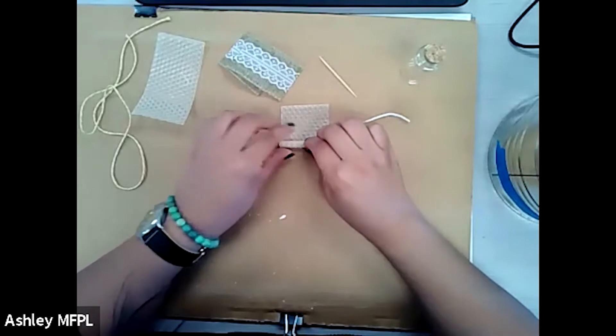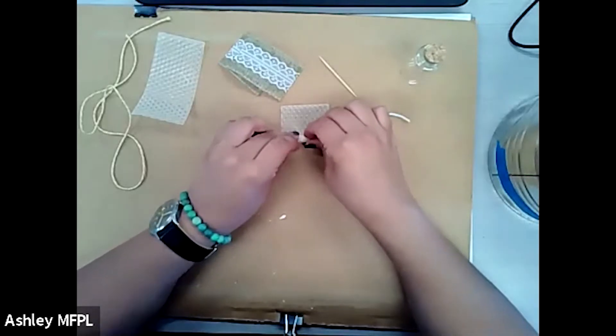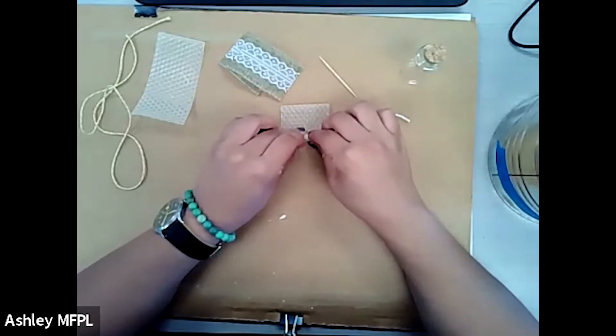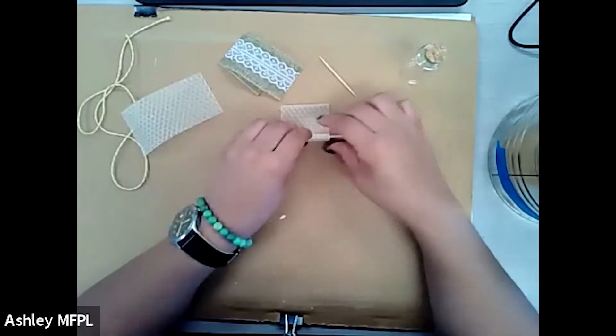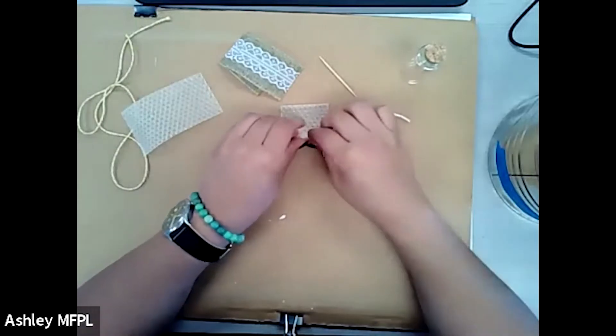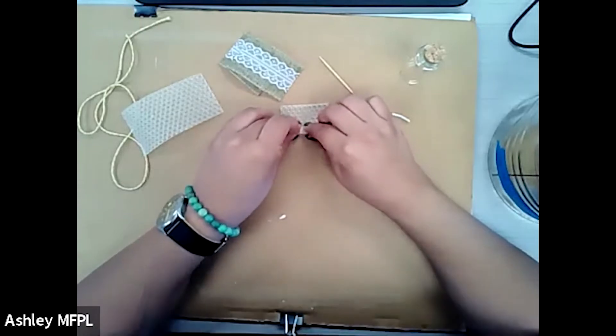And the wick we're using, we're just using a plain wick. But what some people like to do, they like to dip it in leftover, like they'll melt pieces of the honeycomb. And they'll dip the wick in there for a longer burn. So that's something you can do in the future.